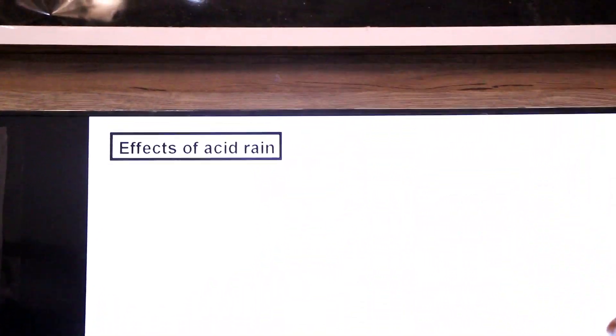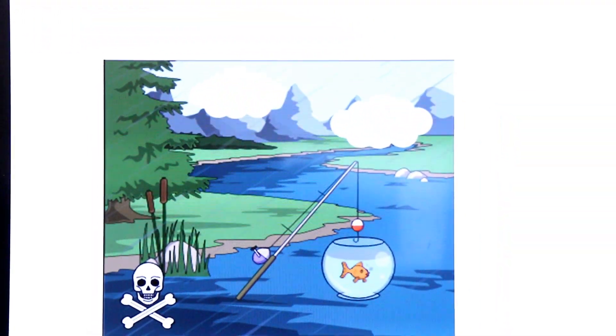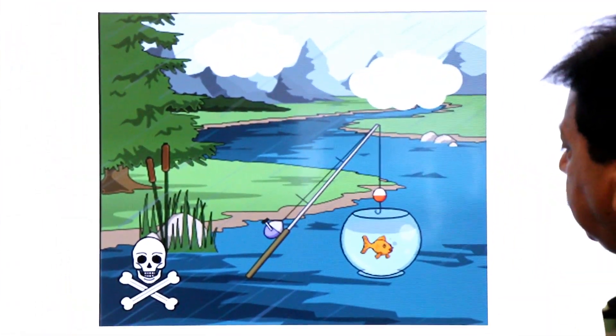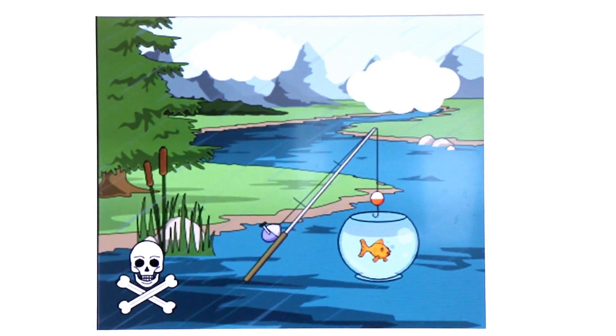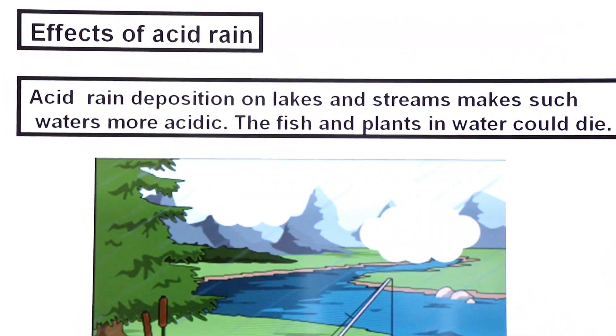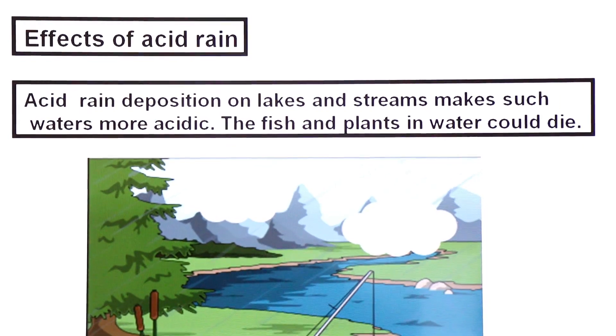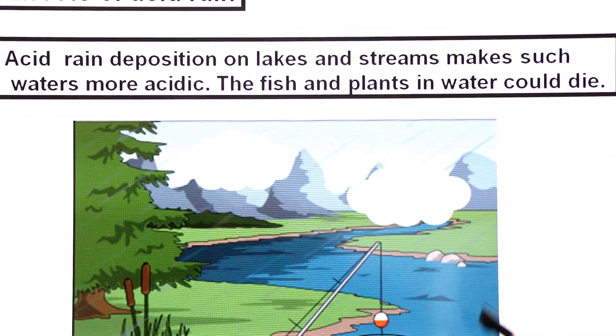Dear students, we have studied the chemistry of acidic rain. Now we come to its effects. Acidic rain has effects on ponds, lakes, plants, building stones, statues, and human health. Effects of acidic rain: if acidic rain falls on a pond or lake, the water there will become acidic, and the life of fish and plants inside will also be affected. Acid rain deposition on lakes and streams makes such water more acidic — the fish and plants in water could die.